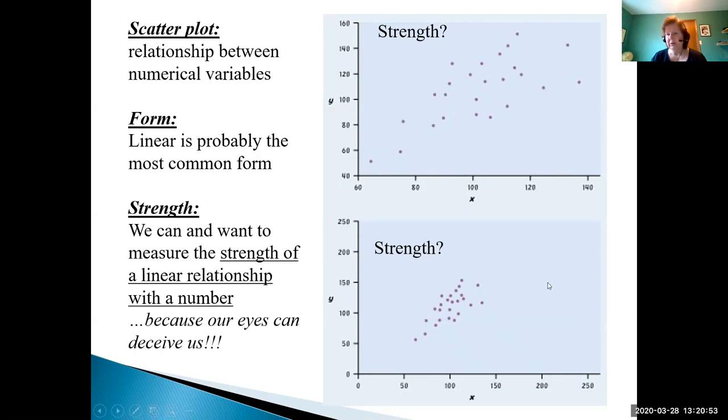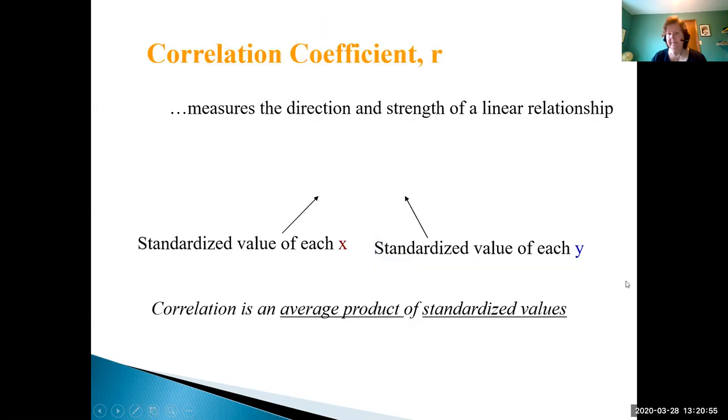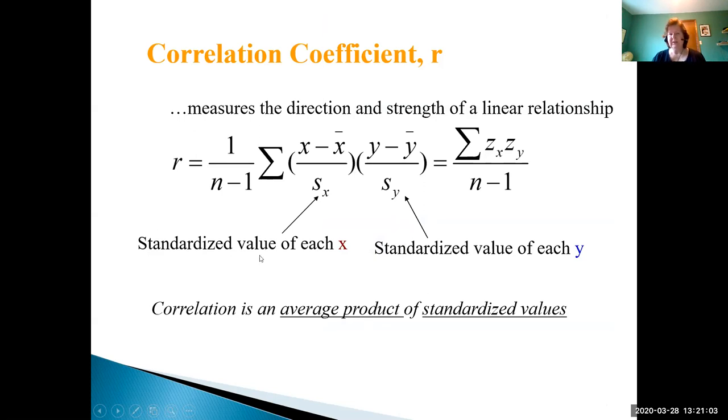The formula for correlation coefficient is this nasty looking thing here. It's actually not too bad. The correlation value, the symbol is little r, and is considered the average product of standardized values. If you take a look at these two bracketed expressions here, well those are z-scores: point of interest minus center divided by spread, so the observed value minus the average divided by the spread.